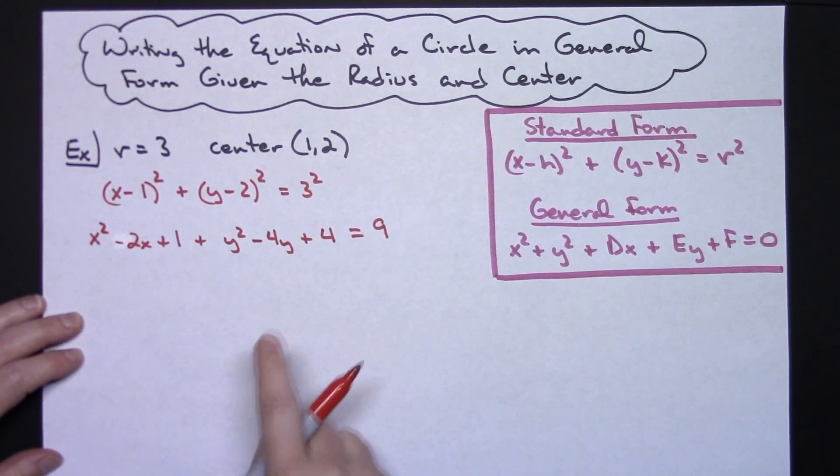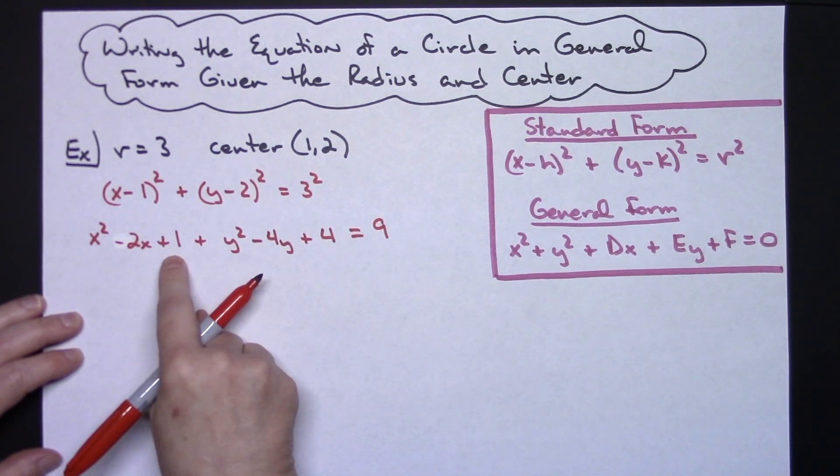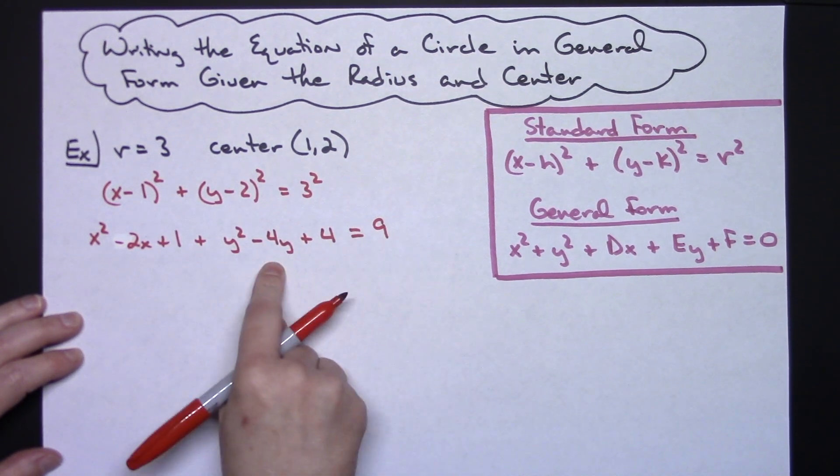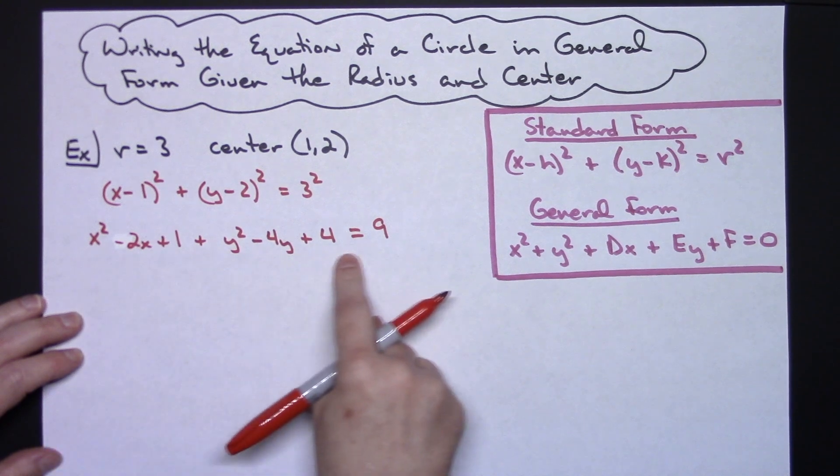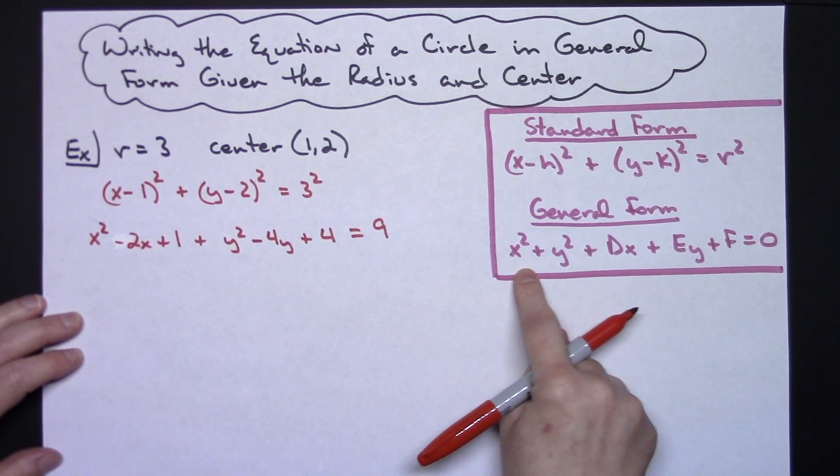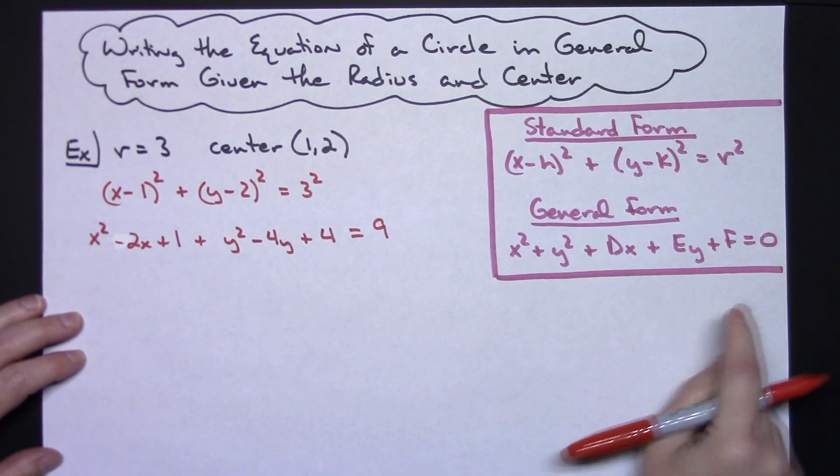Alright now at this point I do have some like terms on this side that I can add and then subtract that 9 over. It's a matter of taking these terms now and putting them in the appropriate order for general form.